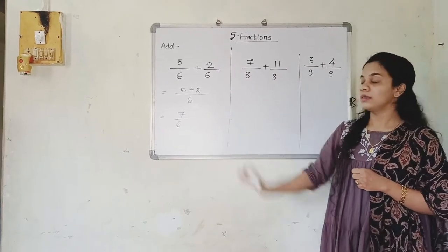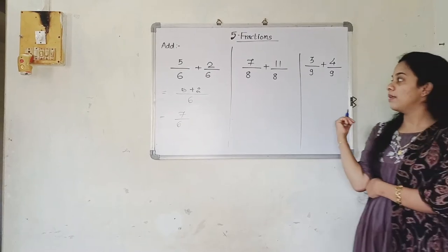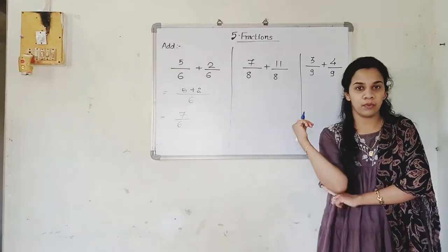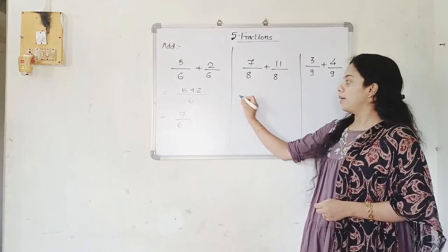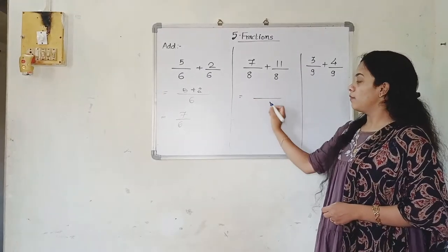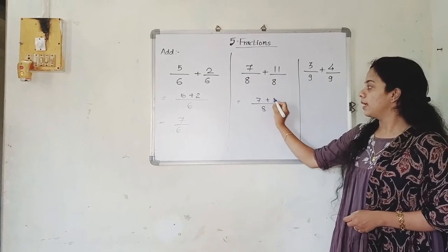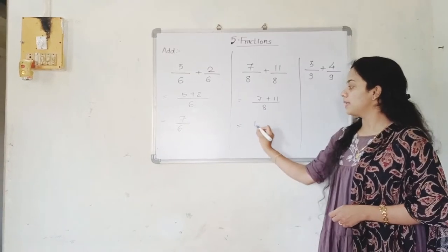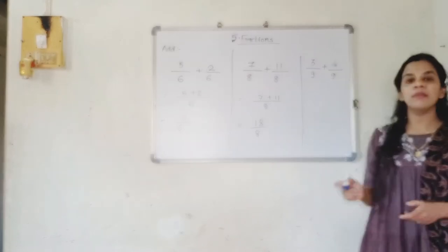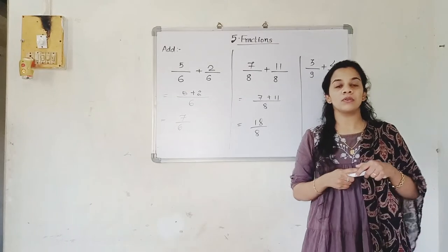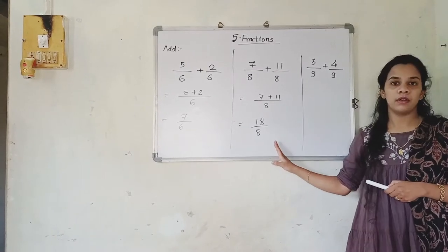The answer is 7 upon 6. Now the next question: 7 upon 8 plus 11 upon 8. We take the common denominator one time, then 7 plus 11 gives 18 upon 8. Now this can be reduced — but that topic is not being taught right now, so I am not going to cover it. But this can be reduced.